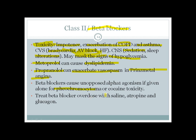If a patient has pheochromocytoma or cocaine toxicity, giving beta blockers leads to unopposed alpha-1 agonism. For beta blocker overdose, treatment includes saline, atropine, and most importantly glucagon — because beta blockers decrease cyclic AMP, and glucagon increases cyclic AMP, counteracting the effects of beta blockade.